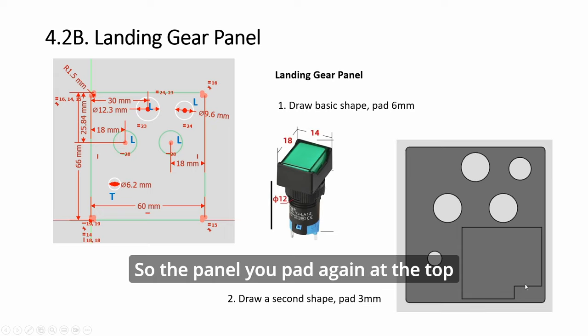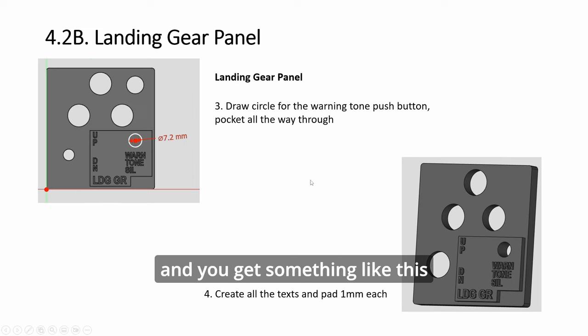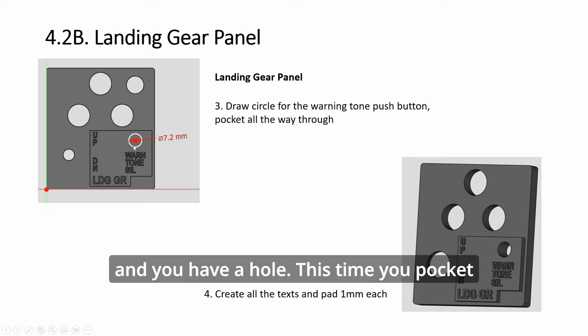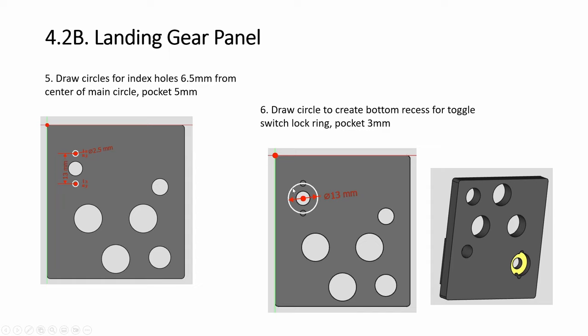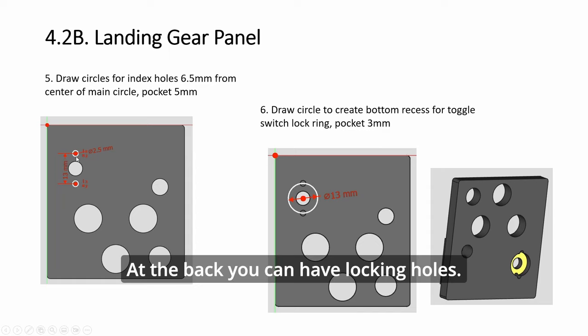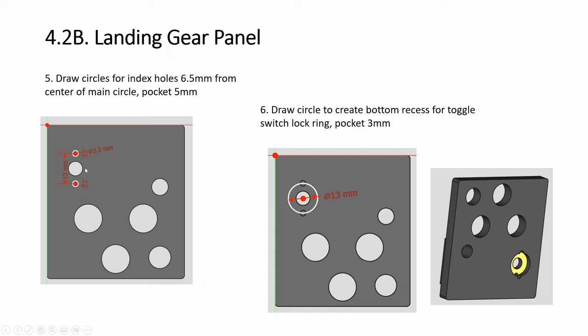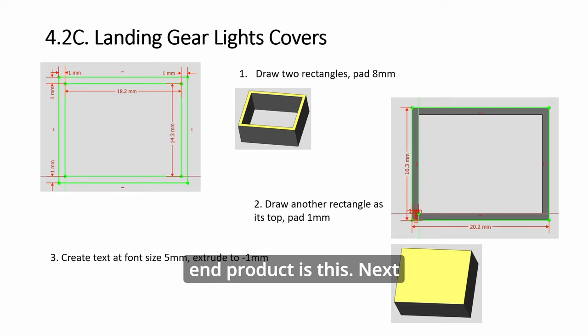For the panel, you pad at the top with this shape, 3mm. You have a hole that you pocket all the way through, then you add text and pad. This is the finished panel. You have a push button here for the warning tone. In the back you can have locking holes - it's optional. Since it's landing gear you might be using it quite a bit, so if you don't want it to spin, have locking holes, have a recess.